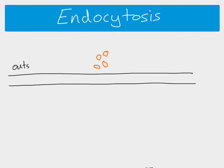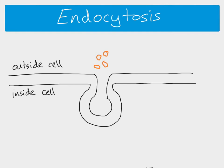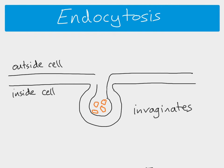Endocytosis is basically the opposite — this time we're taking substances from outside the cell and moving them inside. The cell surface membrane invaginates, meaning it forms a pinched-off part that becomes a vesicle. The substances move in, the cell surface membrane fuses behind it, and again the outside and inside of the cell are never in contact. The vesicle then pinches off and moves inside the cell.